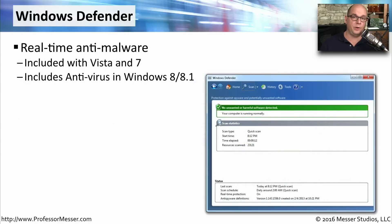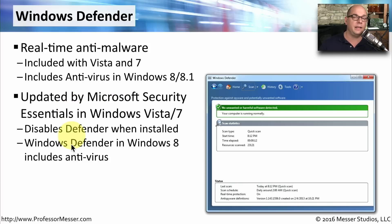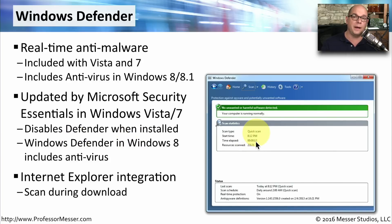To help maintain the security of your operating system, Microsoft includes a utility called Windows Defender. In Windows Vista and Windows 7, this is an anti-malware application, while in Windows 8 and 8.1 it also includes anti-virus capabilities. If you wanted both anti-malware and anti-virus in Vista or Windows 7, you would install Microsoft's free Security Essentials, which effectively disabled Windows Defender but provided both capabilities. There is no Security Essentials for Windows 8, since Windows Defender already provides both. Windows Defender also integrates with Internet Explorer to protect everything happening in your browser.